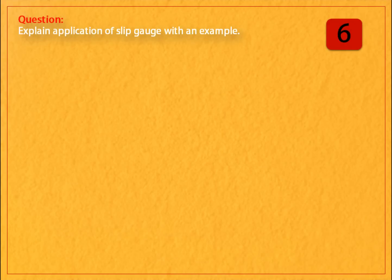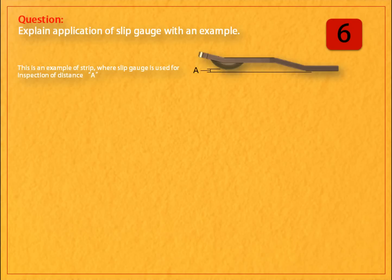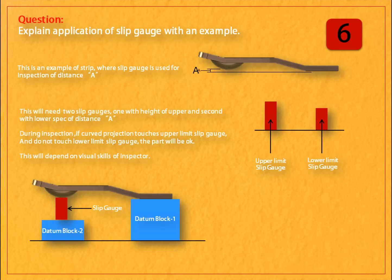Question: explain the application of a slip gauge with an example. Answer: this is an example of a strip where a slip gauge is used for inspection of distance A. This will need two slip gauges — one with the height of the upper spec and a second with the lower spec of distance A. During inspection, if the curved projection touches the upper limit slip gauge and does not touch the lower limit slip gauge, the part will be okay. This depends on the visual skills of the inspector.